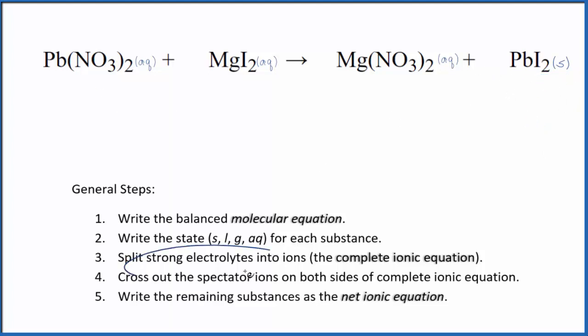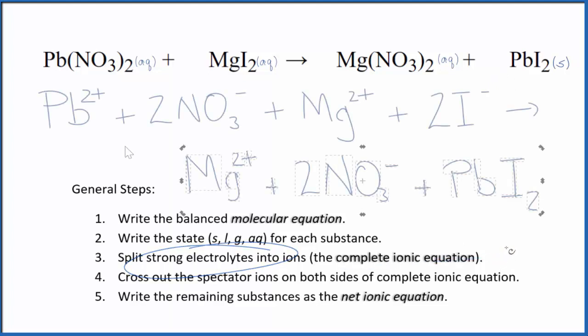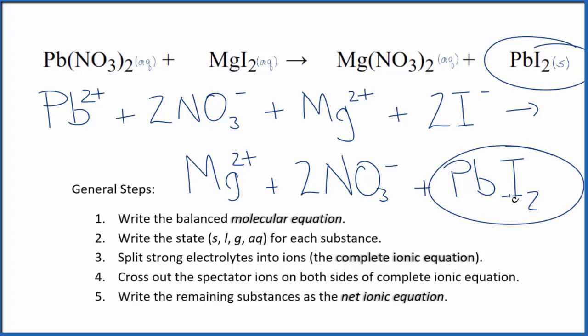Now we can split the strong electrolytes into their ions for the complete ionic equation. And that looks like this. So this is the complete ionic equation. Note that we don't split solids apart in net ionic equations. So that lead 2 iodide is going to stay together.